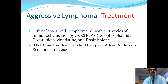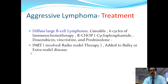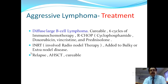For aggressive lymphomas — diffuse large B-cell lymphoma — the treatment regimen is R-CHOP: rituximab, cyclophosphamide, doxorubicin, vincristine, and prednisone, given in cycles. Involved-node radiation therapy is added especially when lymph nodes are bulky or extranodal involvement is present. In case of relapse, autologous hematopoietic stem cell transplantation is the treatment of choice.